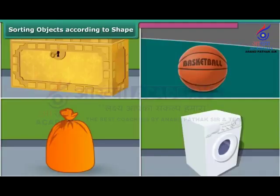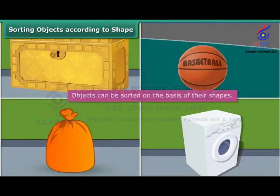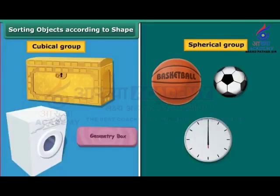A box is a cube or a cuboid, whereas a ball is a sphere. A laundry bag is cylindrical in shape whereas a washing machine is cuboidal. Thus, we can classify objects on the basis of their shapes — circular or spherical objects form one group, while cubical, cuboidal, square, and rectangular objects form another group. Such a classification allows us to study and analyze the properties of different shapes.